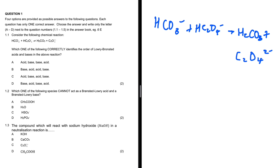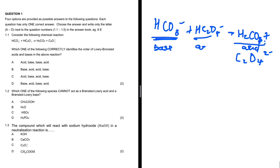Looking at HCO₃⁻, in the products we have H₂CO₃, meaning that HCO₃⁻ has gained or received a proton, making it our base, with H₂CO₃ as our conjugate acid. That means HC₂O₄⁻ will be our acid, leaving C₂O₄²⁻ as our conjugate base.